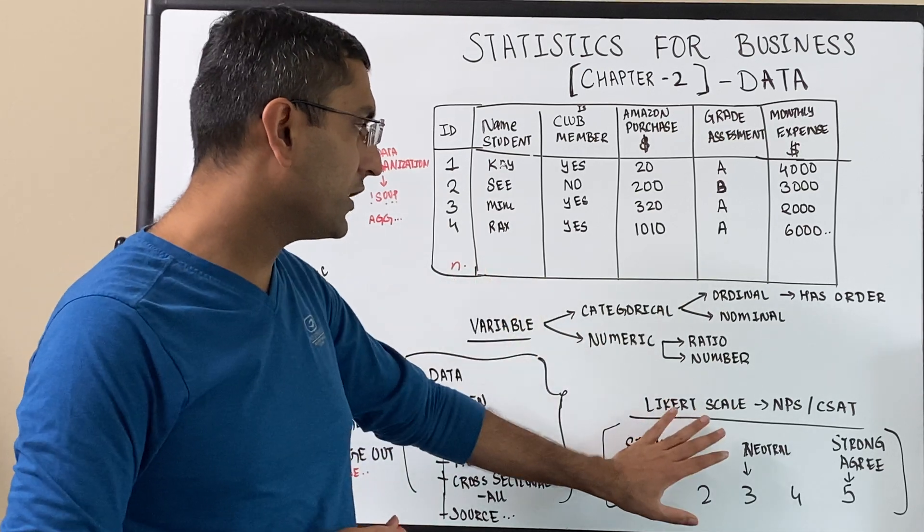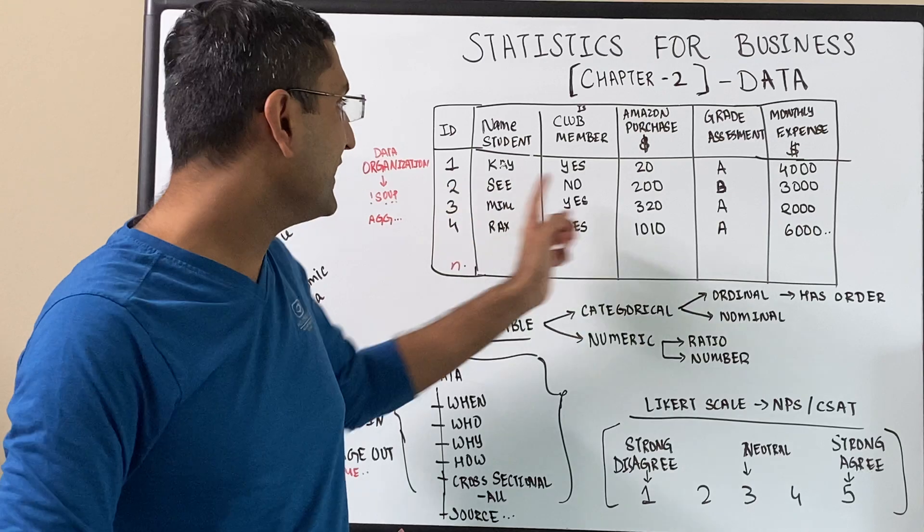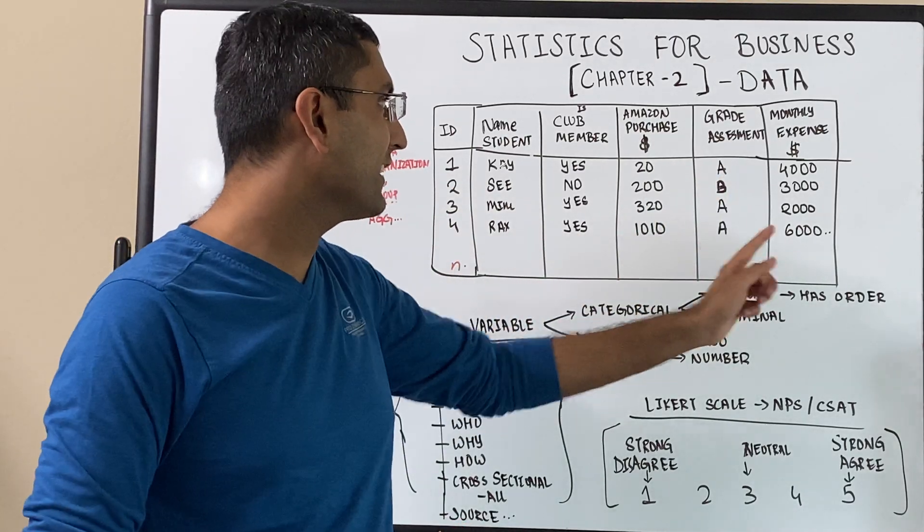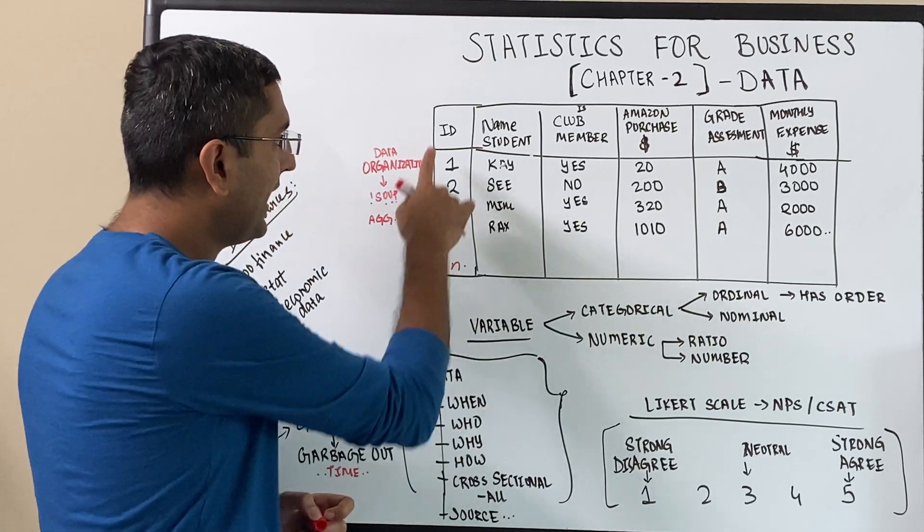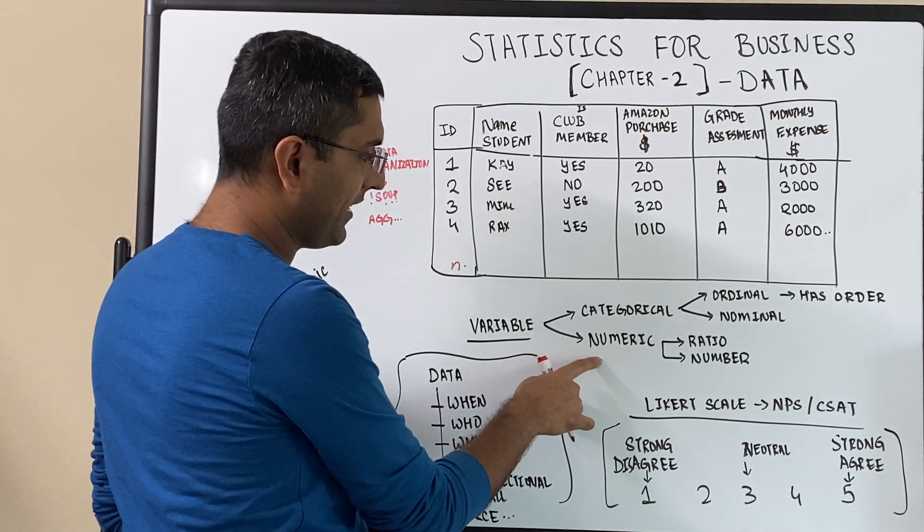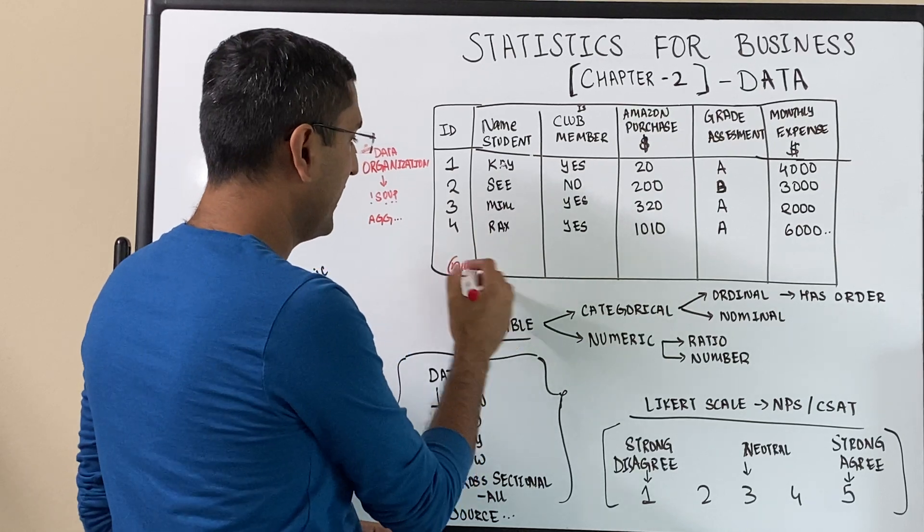So now that we understood the variables, we took an example, now let's look at real life. What are these? Let's try to see and work it out. What kind of variable is ID? ID, is it a numeric? Yeah, it's numeric. So I'm just going to say this is numeric.